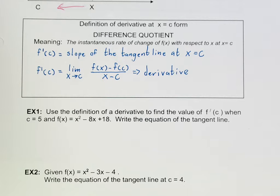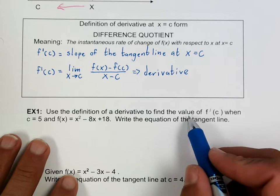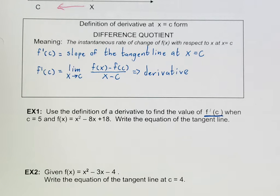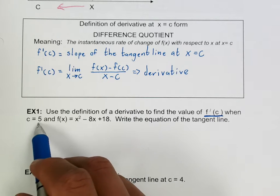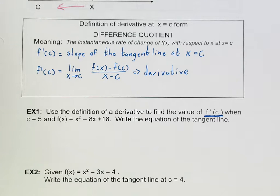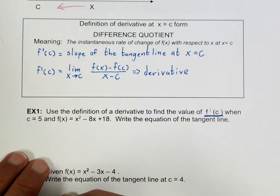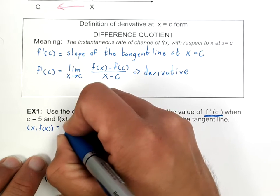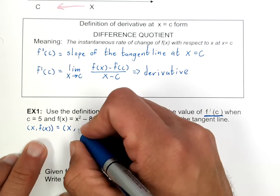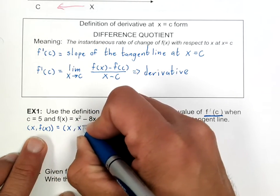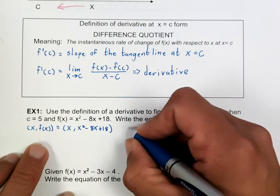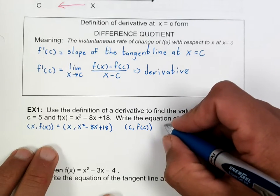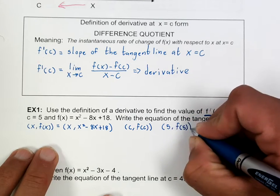What we're looking for is the slope of the tangent line on this function at x equal to 5, or in this case c equal to 5. First, we'll identify our (x, f(x)) — which is x and x²-8x+18 — and our (c, f(c)). The constant c is 5, and f(5) — plugging 5 into the equation — equals 3. So there's a point on f(x): (5, 3), and that's where we're going to find the slope of the tangent line.